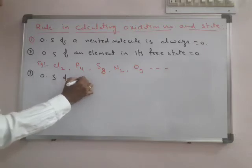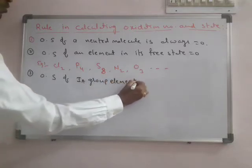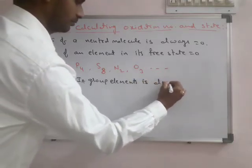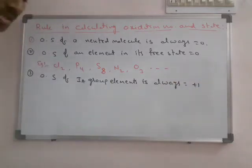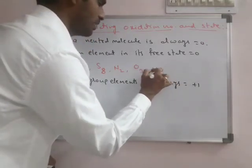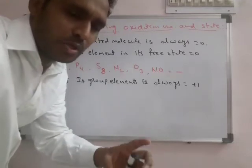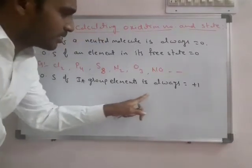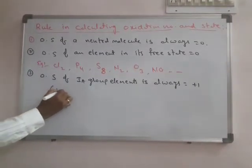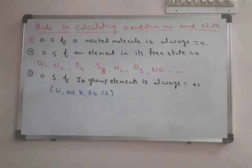The oxidation state of Group 1A elements in compounds is always equal to plus 1. Group 1A elements are: lithium, sodium, potassium, rubidium, cesium. They have general valence configuration NS1, meaning only one electron in their valence shell. After losing that valence electron they achieve nearest noble gas configuration — for example, lithium becomes helium configuration, sodium becomes neon, potassium becomes argon. They always lose one electron and never accept electrons, so their oxidation state is compulsorily fixed at plus 1.